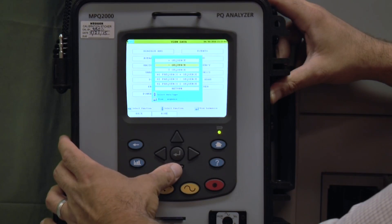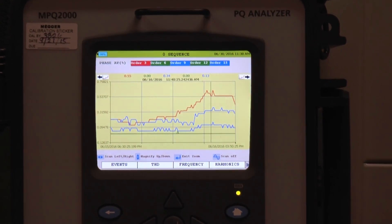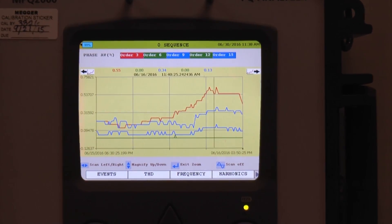View positive, negative, and or zero-sequence harmonics. You can zoom in, create scan line, and examine the data immediately.